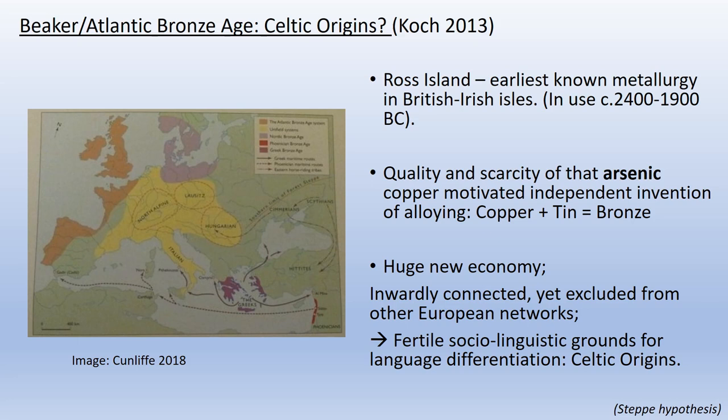I'm going to talk a little bit about John Koch's idea for Celtic origins. He mentions a site called Ross Island, which is in Killarney. That site produced arsenic copper — in the Greek language, 'arsenic' means strong, because arsenic in the copper made it a very strong metal.